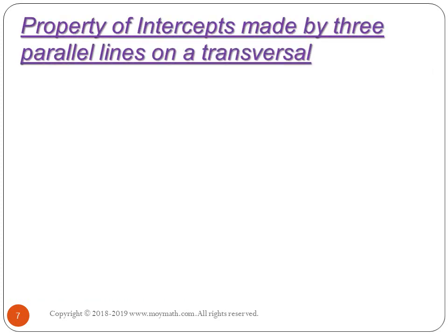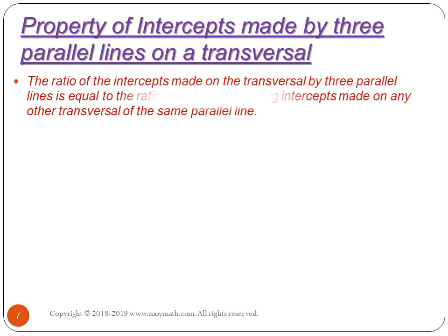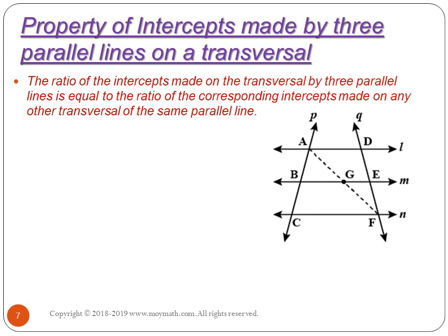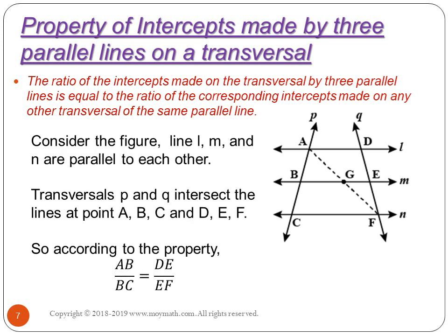The second property concerns intercepts made by three parallel lines on a transversal. The statement is: the ratio of the intercepts made on a transversal by three parallel lines equals the ratio of the corresponding intercepts made on any other transversal of the same parallel lines. If LMN are parallel and transversals P and Q intersect them at points ABC and DEF respectively, then AB/BC = DE/EF.